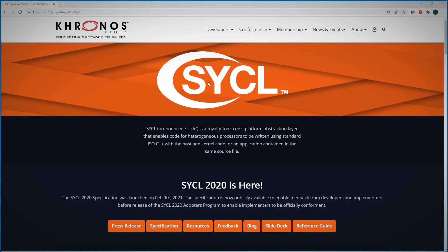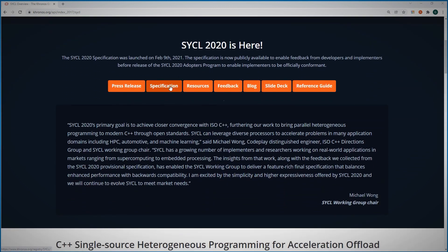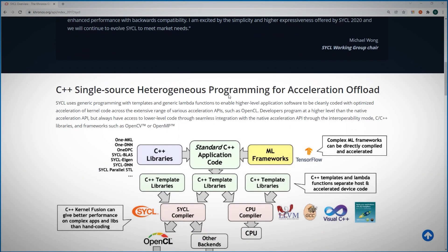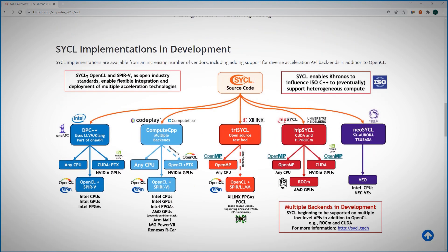Well SYCL is an industry programming model driven by the Kronos group and many contributors from the industry and academia. On the website you'll find the specification and many resources and this is a current map of SYCL implementation. If you have your code implemented in SYCL you can get it to work on Intel CPU GPU and FPGA but also on AMD GPUs, ARM, Nvidia and others. And there are many compilers provided by universities and companies like Xilinx, Codeplay or Intel.